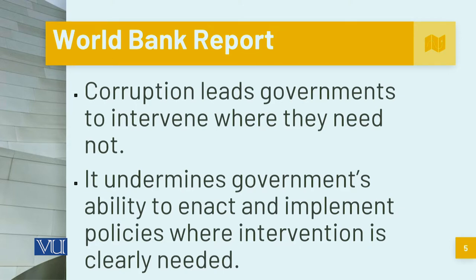When we talk about the World Bank, corruption leads governments to intervene where they need not, and it undermines a government's ability to enact and implement policies where intervention is clearly needed. The areas of intervention of the World Bank include environmental regulation, health and safety regulation, social safety nets, and macroeconomic stabilization.